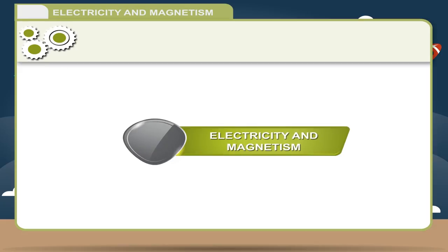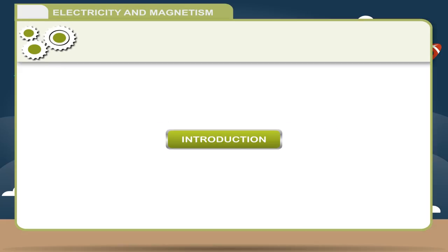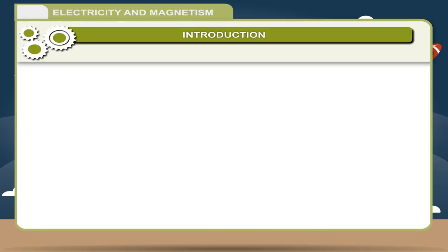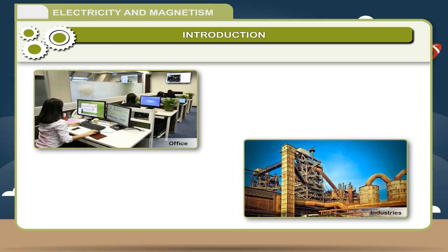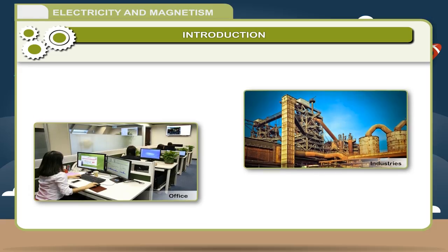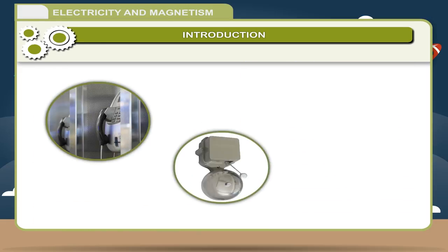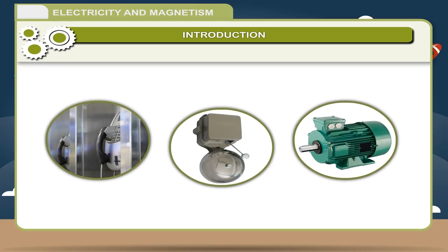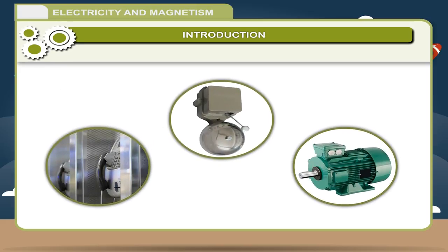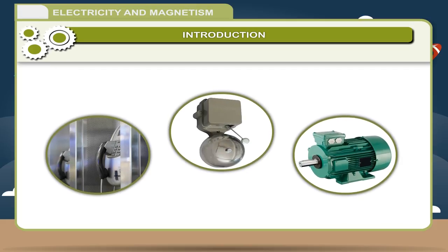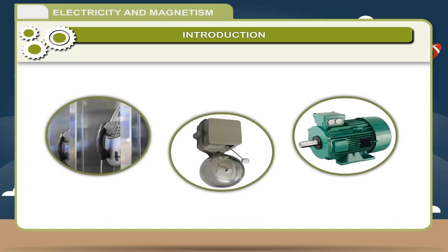Electricity and Magnetism. We cannot imagine life without electricity. We need it at homes, in offices, in industries, in fact everywhere. But have you ever wondered how does a telephone, an electric bell or a motor work? Such devices work on the principle of magnetic effect produced by electricity. Thus, there is a relation between electricity and magnetism.